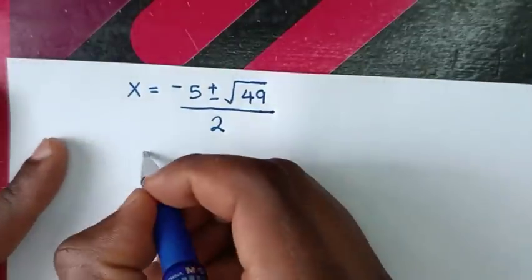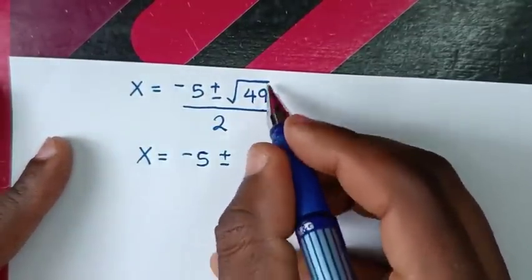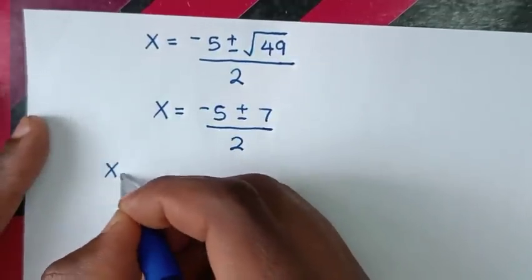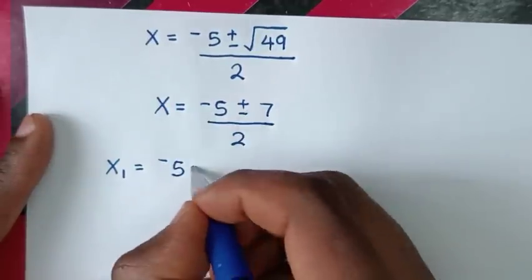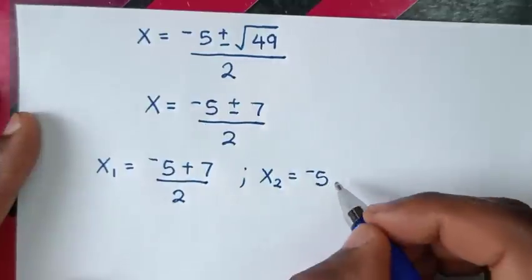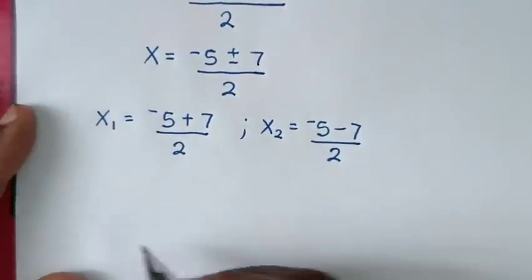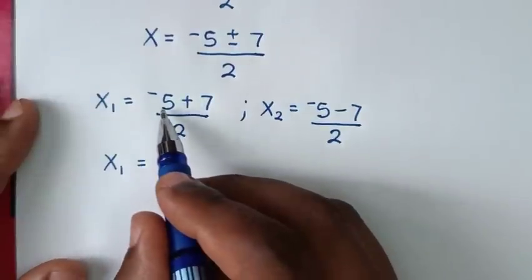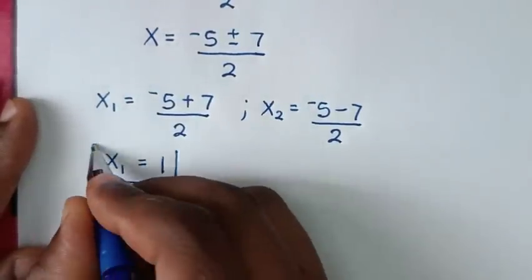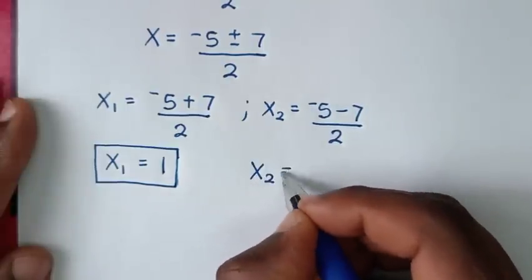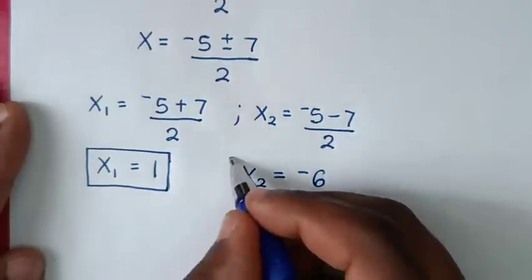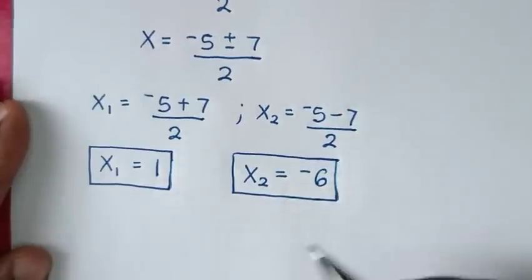Because of the plus or minus, we have two values of x. The first value: x₁ = (−5 + 7) / 2 = 2/2 = 1. The second value: x₂ = (−5 − 7) / 2 = −12/2 = −6. These are both real solutions.